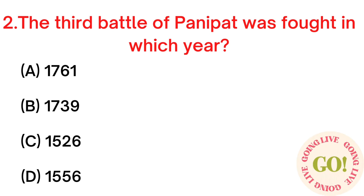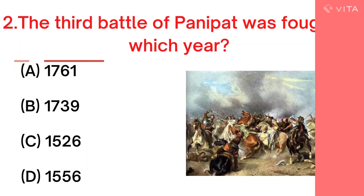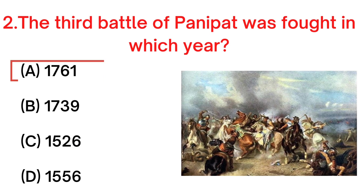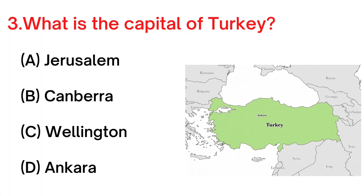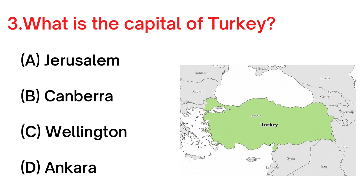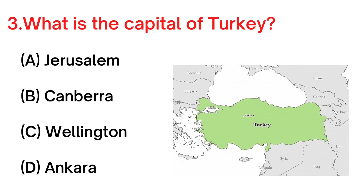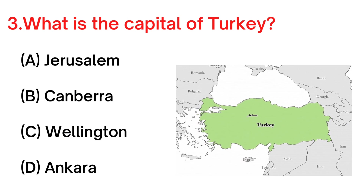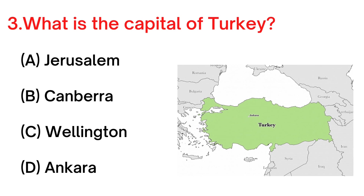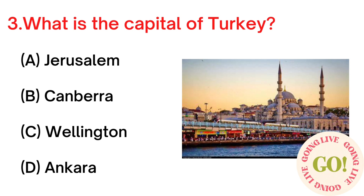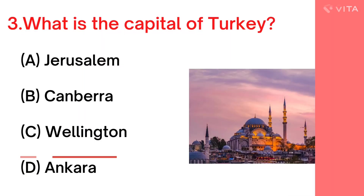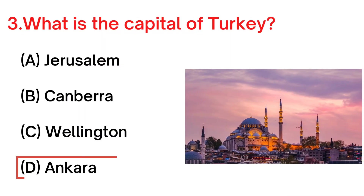Your next question: the Third Battle of Panipat was fought in which year? Your answer is A. 1761. Your next question: what is the capital of Turkey? A. Jerusalem, B. Canberra, C. Wellington, D. Ankara. Your answer is D. Ankara.